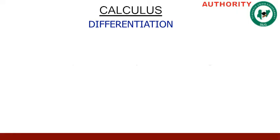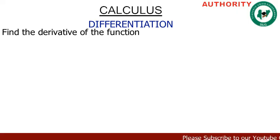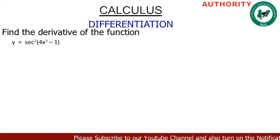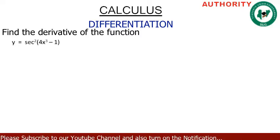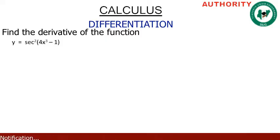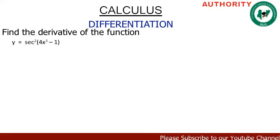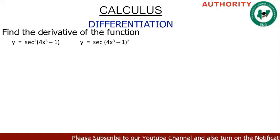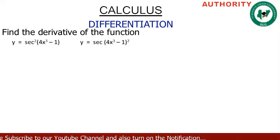Let's find the derivative of the function y = sec²(4x³ - 1). We are asked to find the derivative of this function. Let me rewrite this function as y = sec(4x³ - 1) raised to the power 2, which is the same as the initial expression.